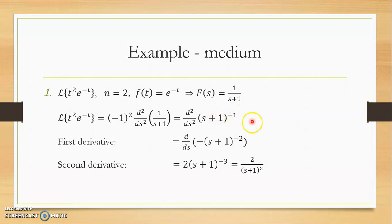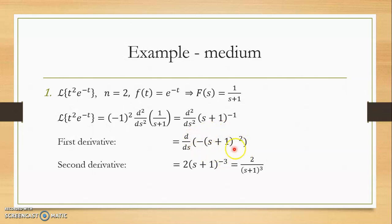We write 1/(s+1) as (s+1)^(−1). Starting with the first derivative: bring minus 1 to the front, giving −(s+1)^(−2). Note that (−1)² is positive. Then for the second derivative, differentiate −(s+1)^(−2): bring minus 2 to the front — minus times minus 2 is 2 — giving 2(s+1)^(−3). Therefore, the Laplace transform of t² · e^(−t) equals 2/(s+1)³.